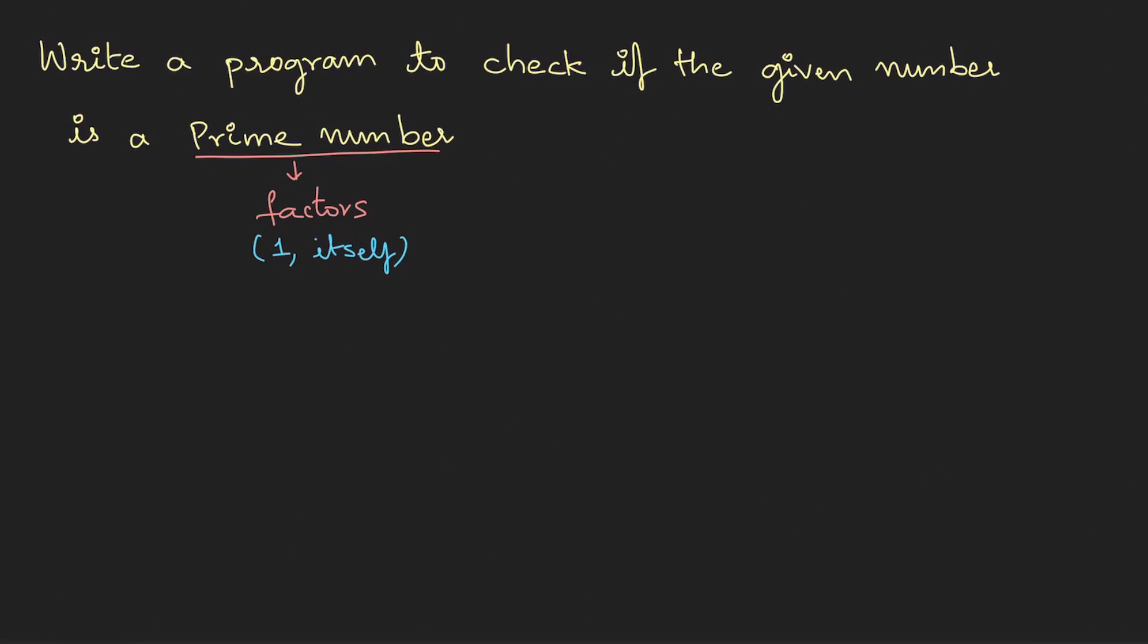Something like if we take 7, the factors for 7 are 1 and 7. These are the only two factors. Now because it has only two factors, that is one and itself, 7 is a prime number.